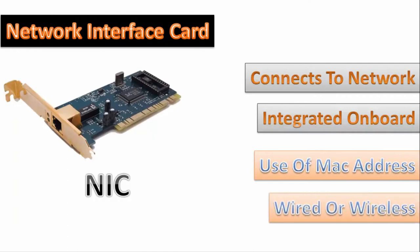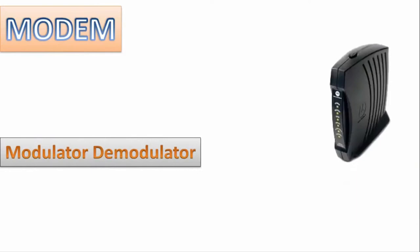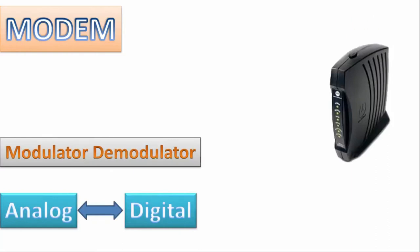A NIC can communicate by wire using an ethernet cable or wirelessly. Now, the next device is a modem, which stands for Modulator-Demodulator. Its main work is to convert analog to digital and digital to analog. Since our computer runs on digital signals, the modem converts data into telephone analog signals so that they can be transferred through telephone lines.